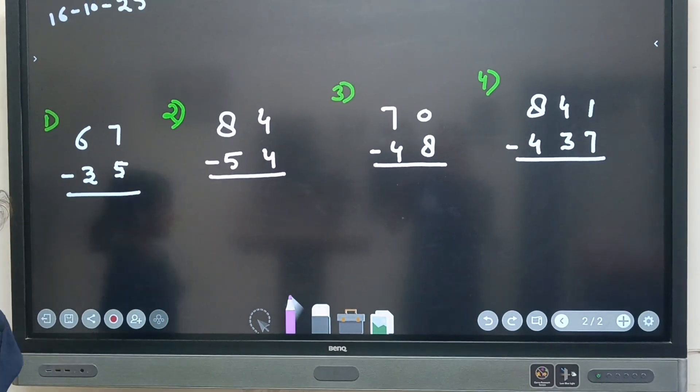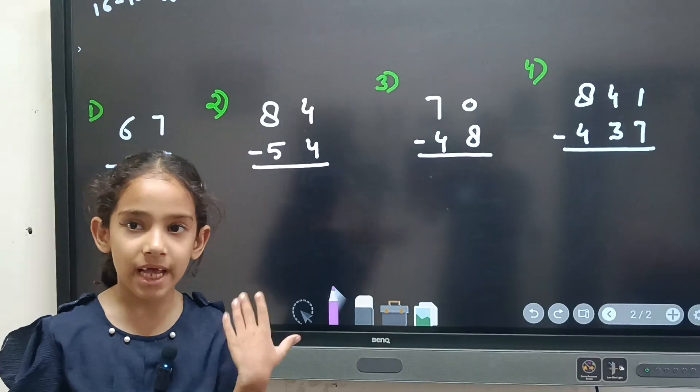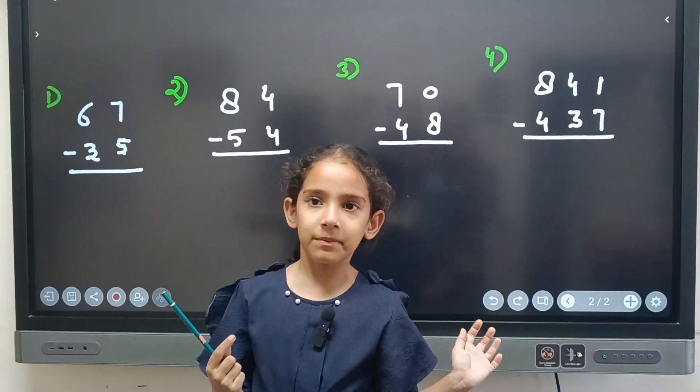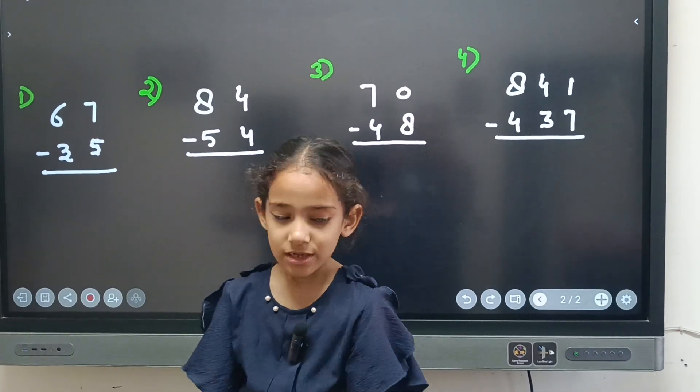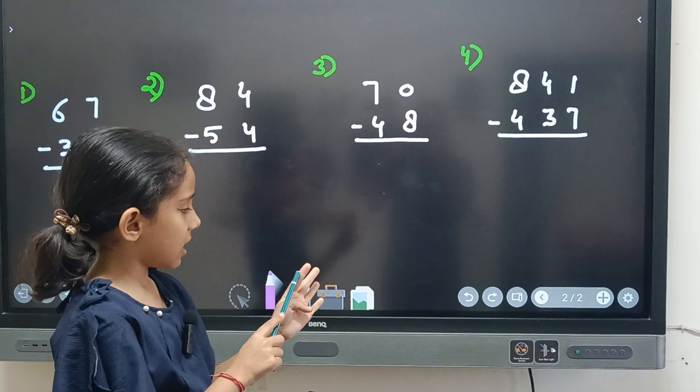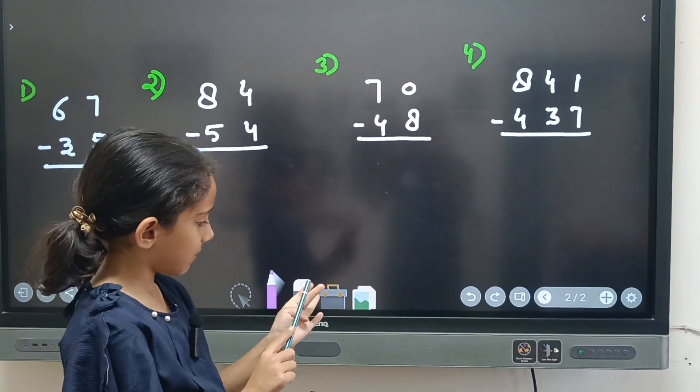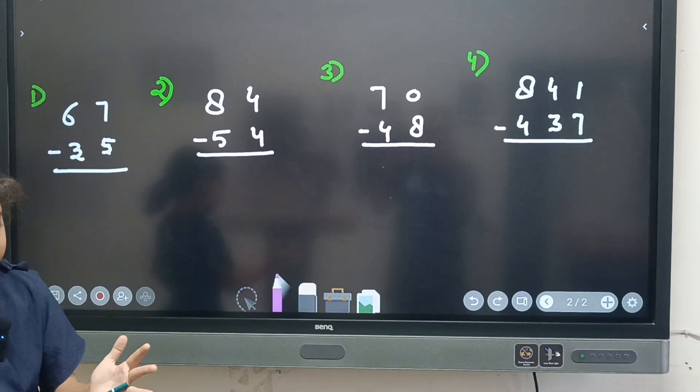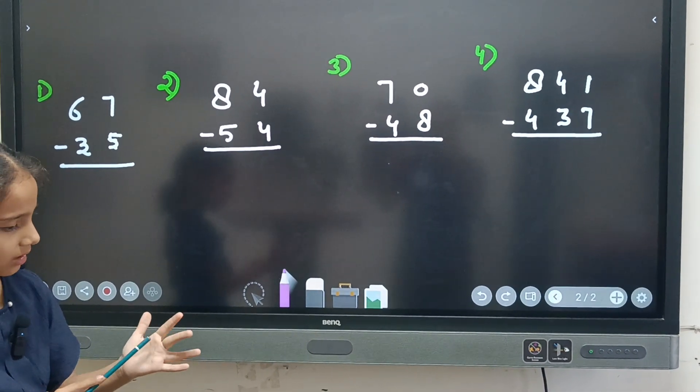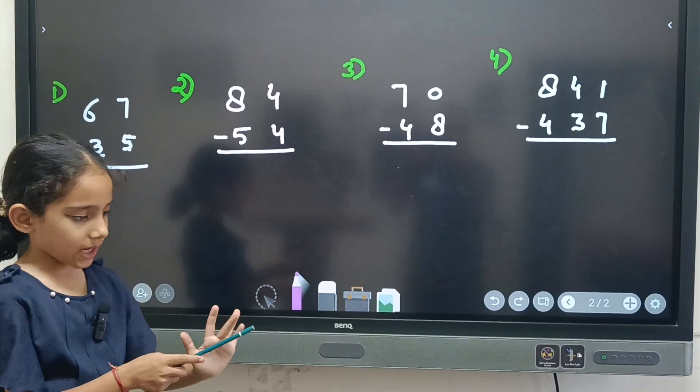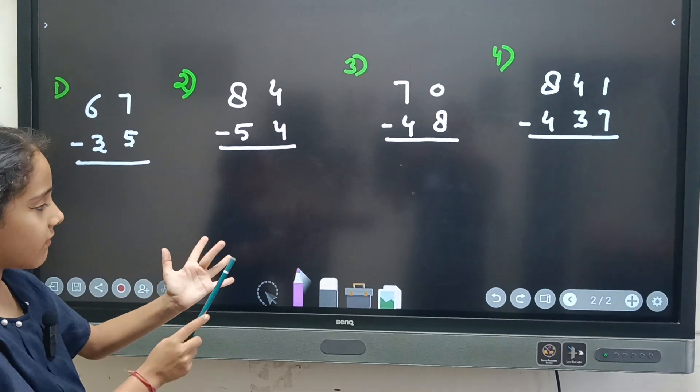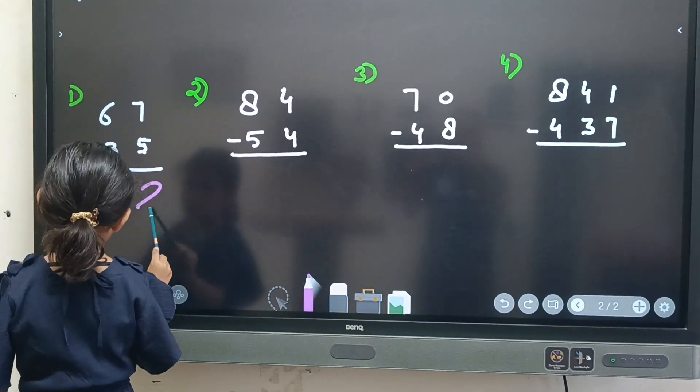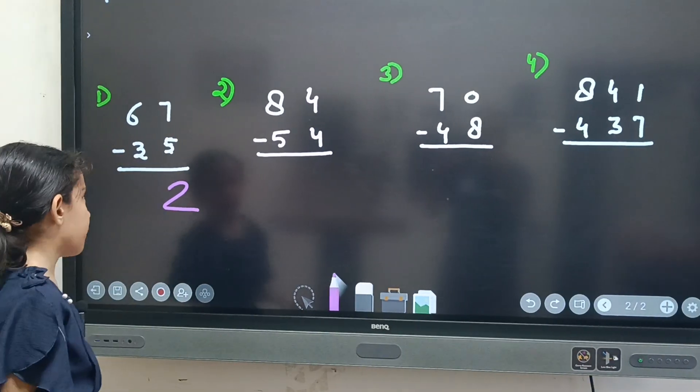So 7 minus 5. Now we raise 7. Now 1, 2, 3, 4, 5, 6, 7. Now we will close 5. 1, 2, 3, 4, 5. Now they are closed. Now how many fingers are left? 1, 2. So answer is 2. This is the way how you solve.